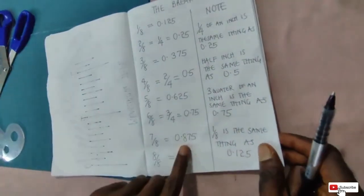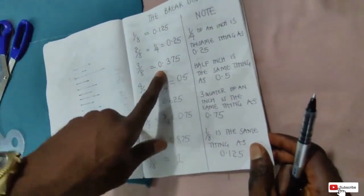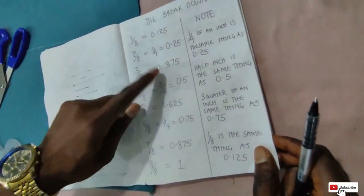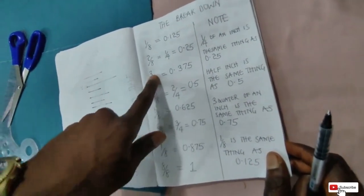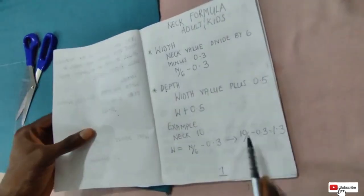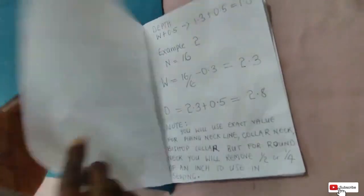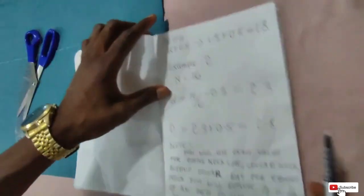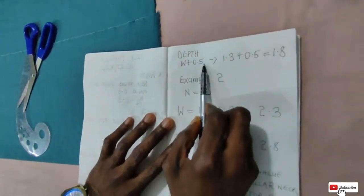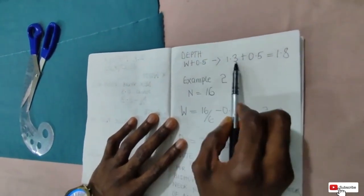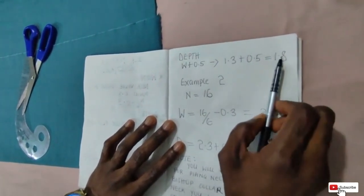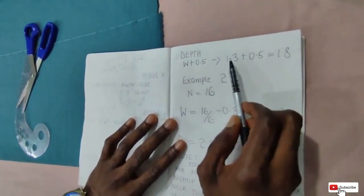Now if you followed my previous class, this 0.3 is the same thing as 3/8 of an inch — take note, 3 over 8. So we'll come to that. The depth is the width value plus 0.5, which is 1.3 plus 0.5. Take note of this result.